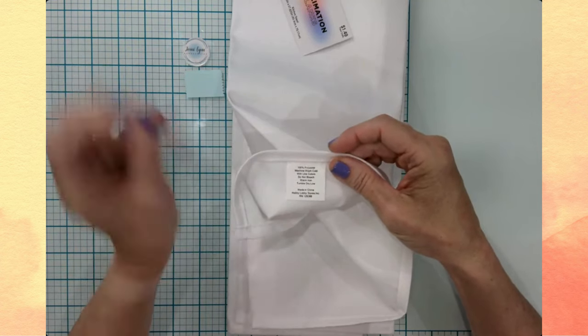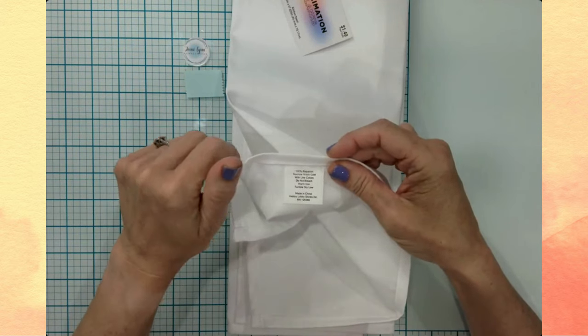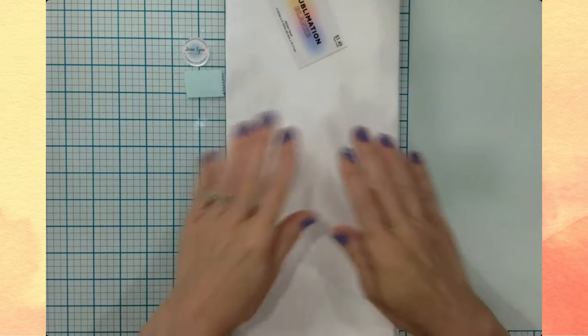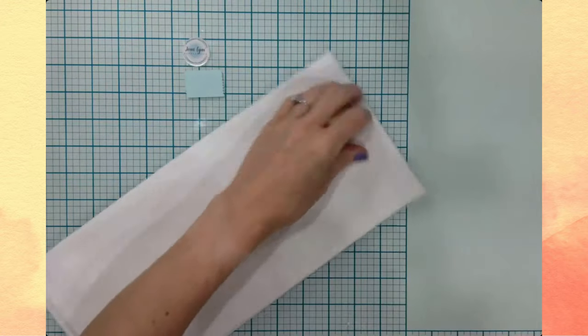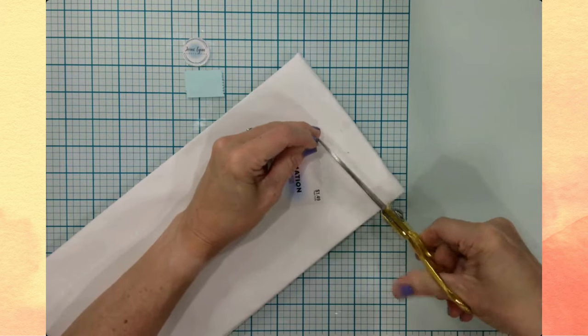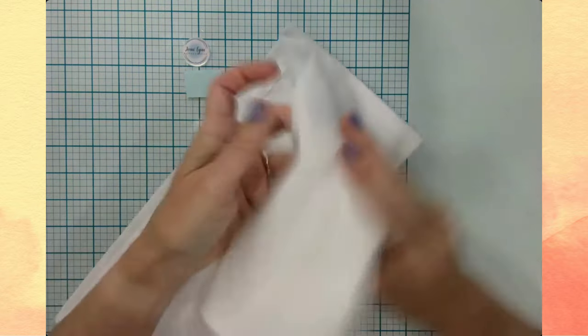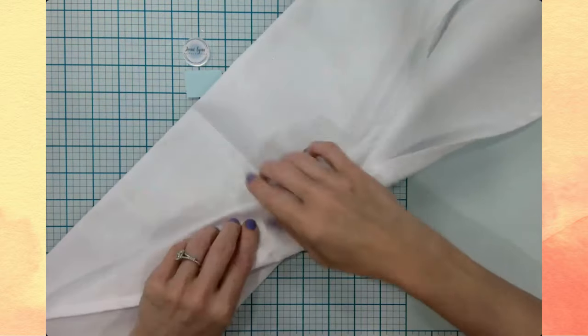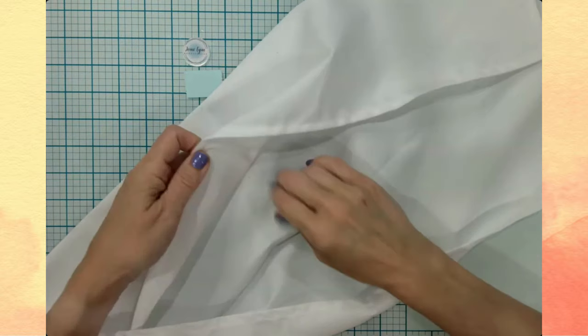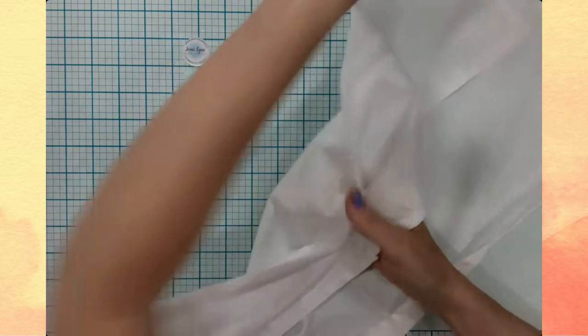You machine wash it in cold, you don't bleach it, you can iron it and tumble dry it low. And so let's go ahead and get started with this project. I'm going to snip off the little tag. I think I just want to go and buy like a crate of these. I can think of all kinds of gifts and whatnot these would make.